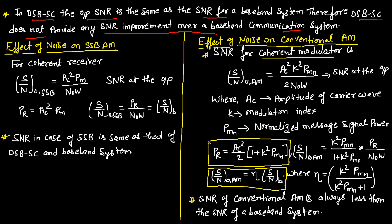Effect of noise on SSB AM. For a coherent receiver, SNR at the output of SSB equals AC²·PM / (N0·W). The received power PR equals AC²·PM. So, SNR output of SSB equals PR / (N0·W), which equals the baseband SNR. Therefore, SNR in case of SSB is the same as that of DSBSC and the baseband system.